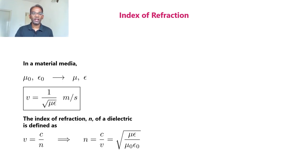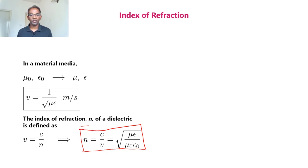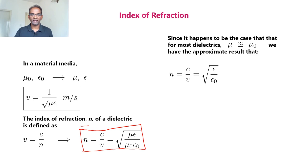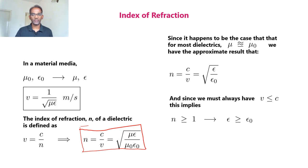The index of refraction n of a dielectric is defined as n equal to c divided by v, which equals the square root of mu epsilon divided by mu zero epsilon zero. In most dielectric materials, mu is approximately equal to mu zero, giving the approximate result that n equal to c divided by v equals the square root of epsilon divided by epsilon zero.